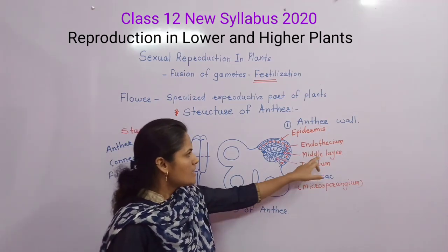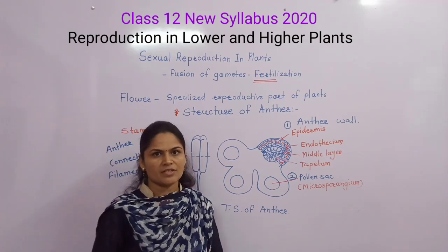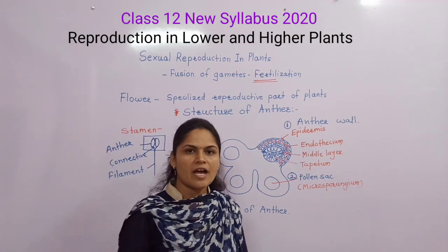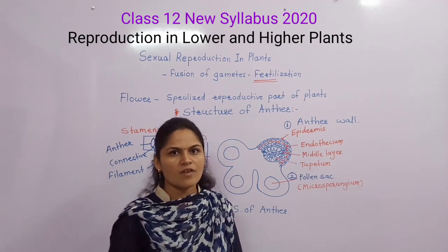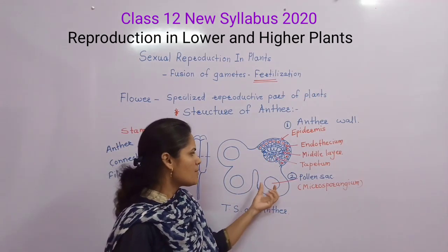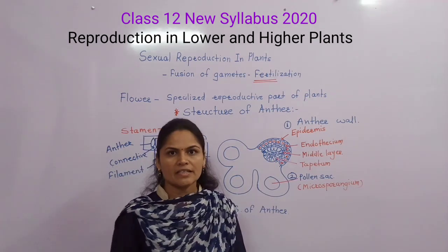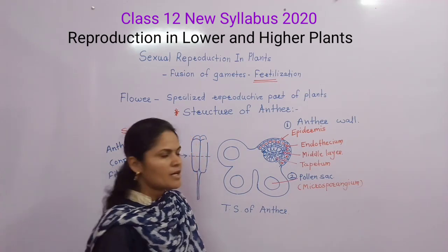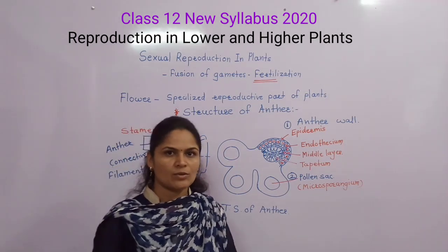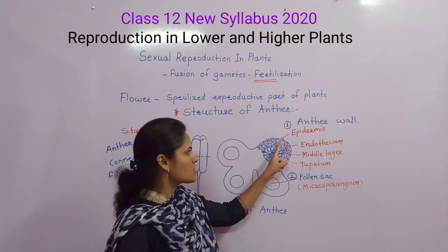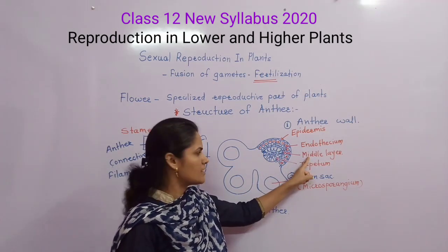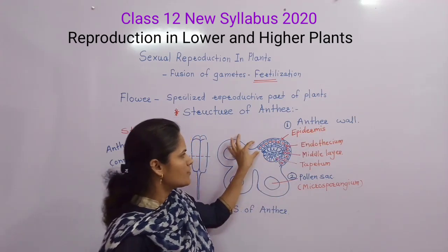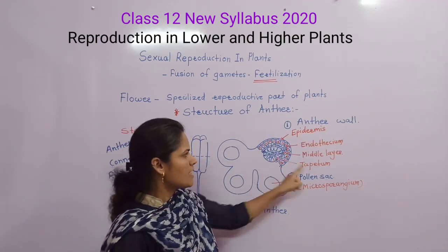The middle layer consists of one to four layers of flattened cells. It degenerates at maturity — meaning as the anther matures and dehisces, the middle layer breaks down and disappears. The fourth layer of the anther wall is the tapetum.